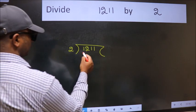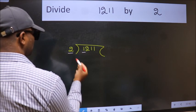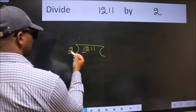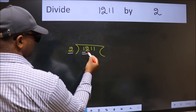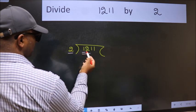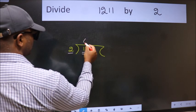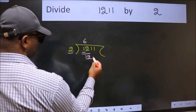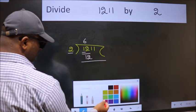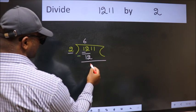Next, here we have 1 and here 2. 1 is smaller than 2, so we should take two numbers: 12. When do we get 12 in the 2 table? 2, 6, 12. Now we subtract and get 0.